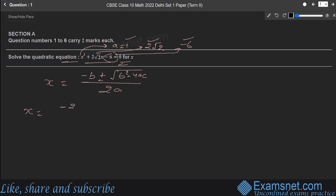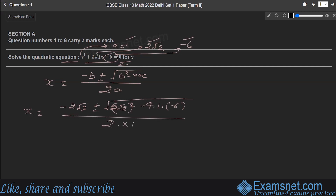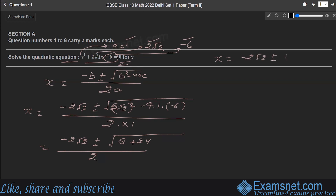Substituting into the Sridharacharya formula: x = (−2√2 ± √((2√2)² − 4·1·(−6))) / (2·1). Now (2√2)² = 8, and −4·1·(−6) = +24, so we get √(8 + 24) = √32. And √32 = 4√2. So x = (−2√2 ± 4√2) / 2.